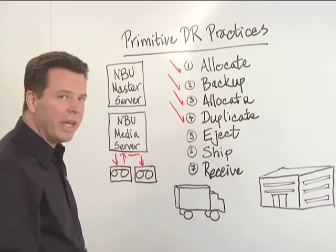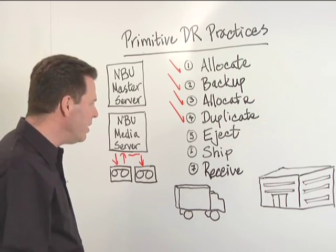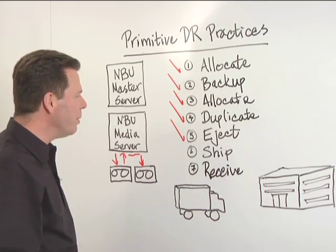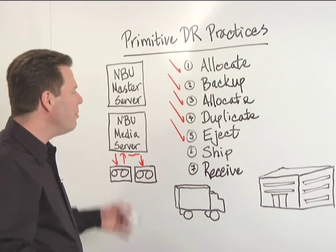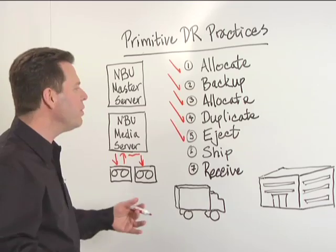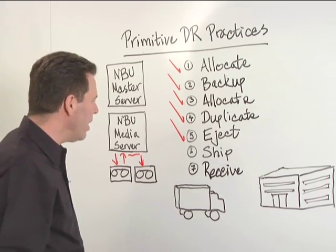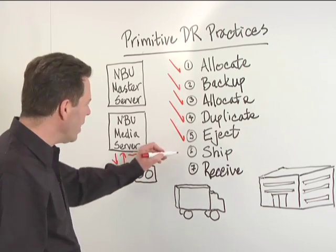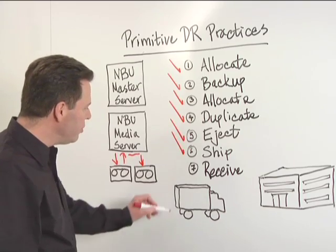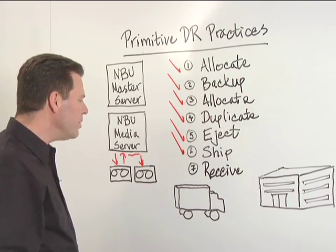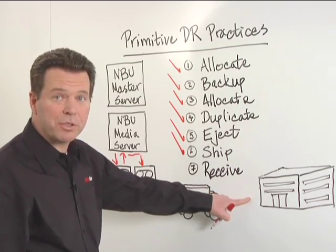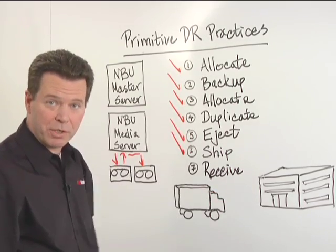Once the duplication process was complete, we'd eject the tape media from the tape library, pack them up in steel lockboxes, inventory the lockboxes, take them to the shipping dock, and move them into a truck. Once they were in the truck, they got transported to a disaster recovery facility.